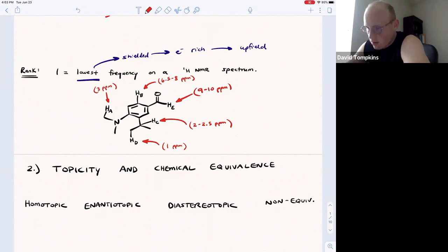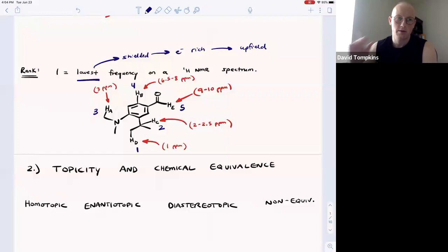So the lowest frequency is going to be HD, followed by the benzylic proton HC, and then the proton adjacent to the electronegative atom. Finally, the aryl proton and the aldehyde are the higher chemical shift because these carbons are sp2 hybridized. Using chemical shift is very important for piecing together a molecule given NMR data.